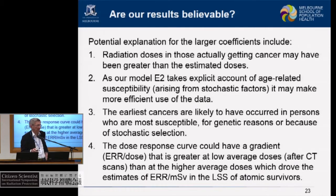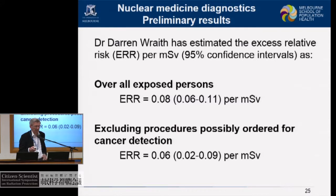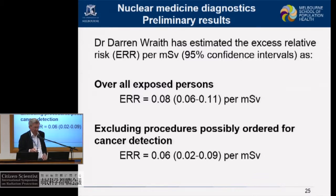We also have nuclear medicine procedure exposures in our cohort. We have an estimate over all exposed people — again, exposures at young age — of excess relative risk of 0.08 per millisievert. Excluding nuclear medicine procedures that could have been ordered for cancer detection gives a slightly smaller but still highly significant estimate. The reverse causation analysis on the nuclear medicine results has not yet been completed.